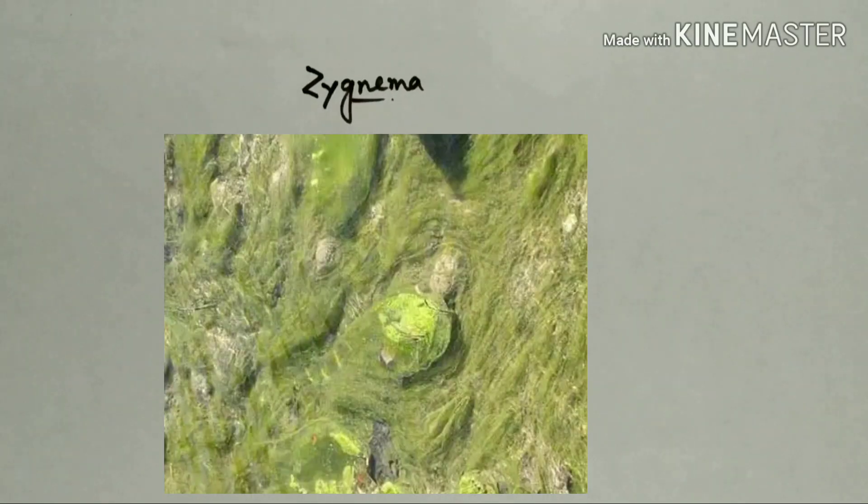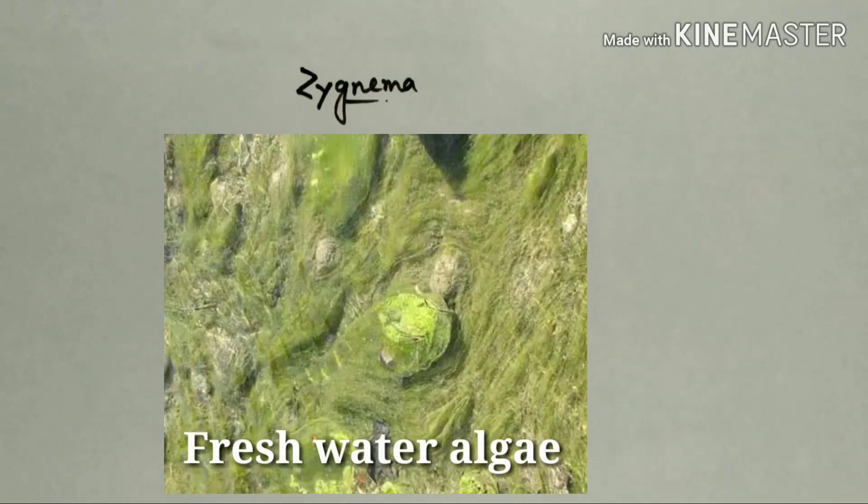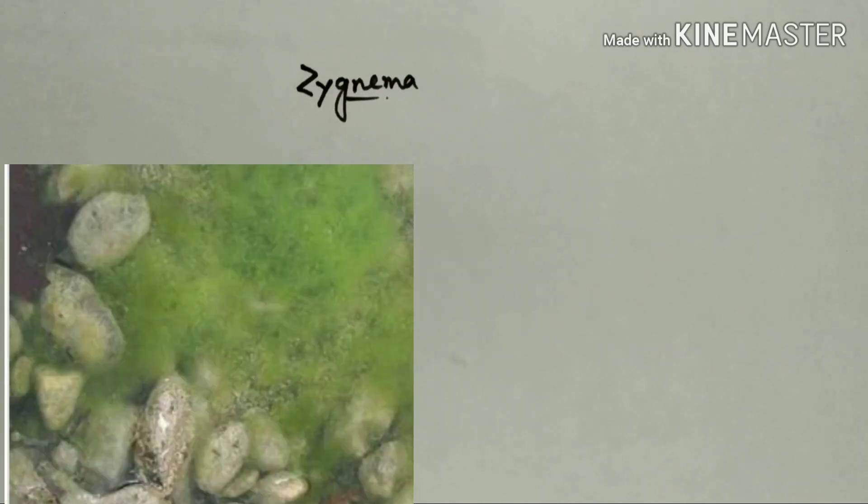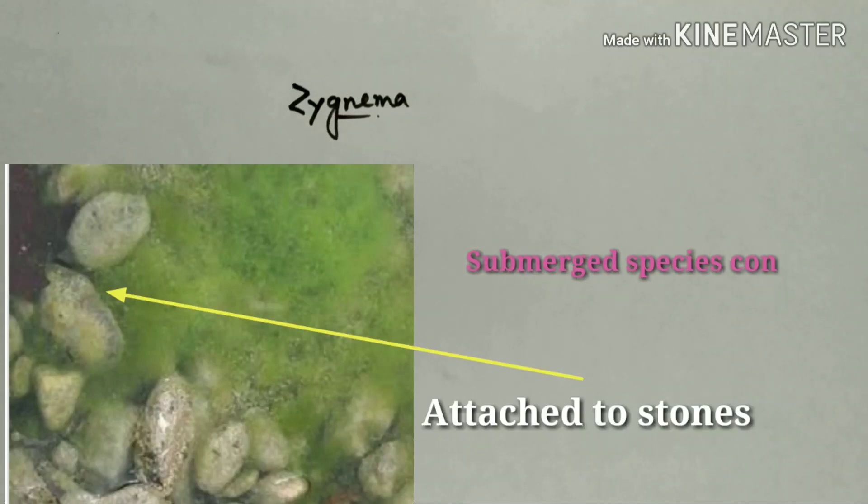Zygnema is a freshwater algae commonly occurring on the surface of slow running water or sometimes submerged. In this type, they are attached to stone or other objects by the help of rhizoids which are called haptera.